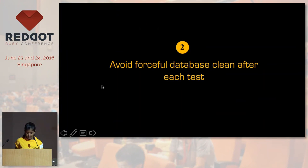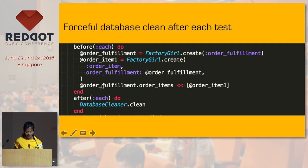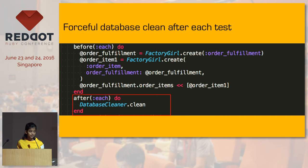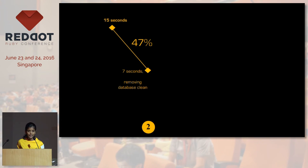One thing we had in our test cases was the statement for forceful database clean. This seems a natural thing to do — you want every test to run on a clean database. But it's not only very expensive, it's also unnecessary, because RSpec runs your test cases in a transaction that is rolled back at the end of the test. So you don't really need to do this. Removing it brings it down to seven seconds, which is 47% savings on the previous 15 seconds.